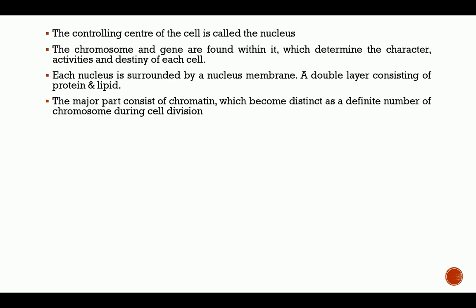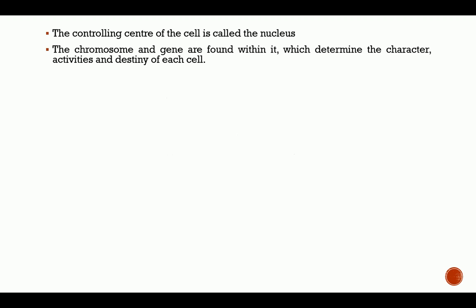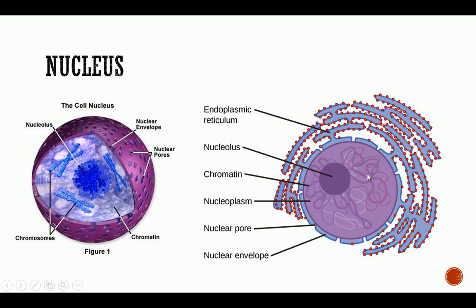The chromatin becomes distinct during cell division. When cell division is not occurring, it does not look distinct — as seen in the image. But once cell division is about to occur, it begins to look distinct and goes into that formation.